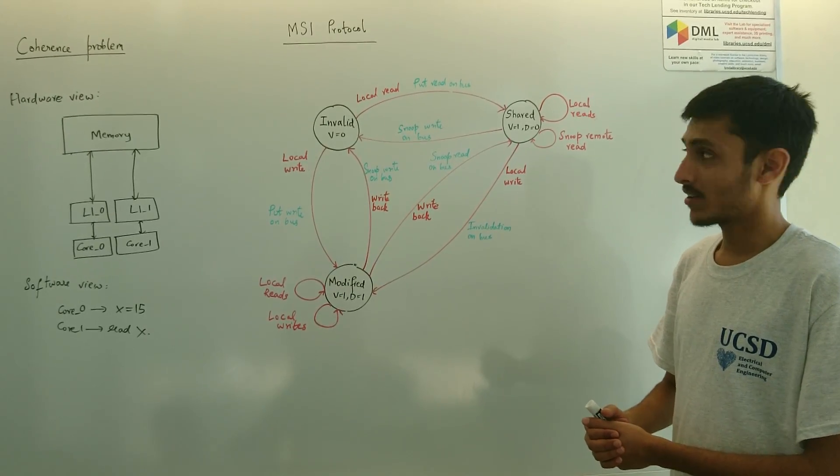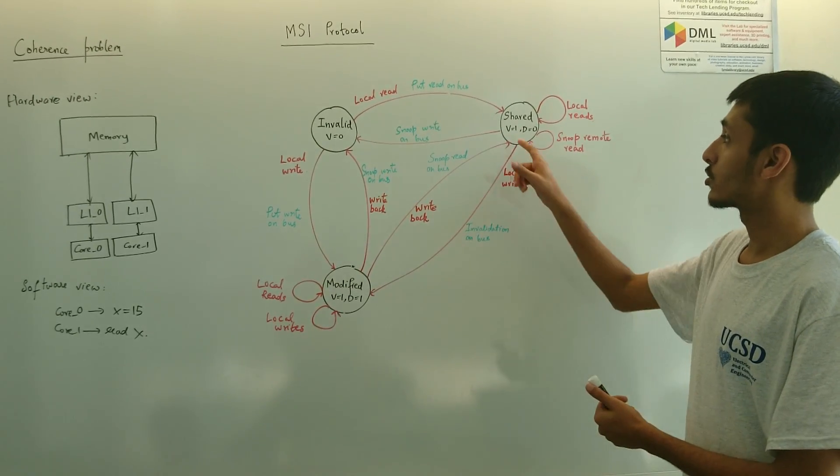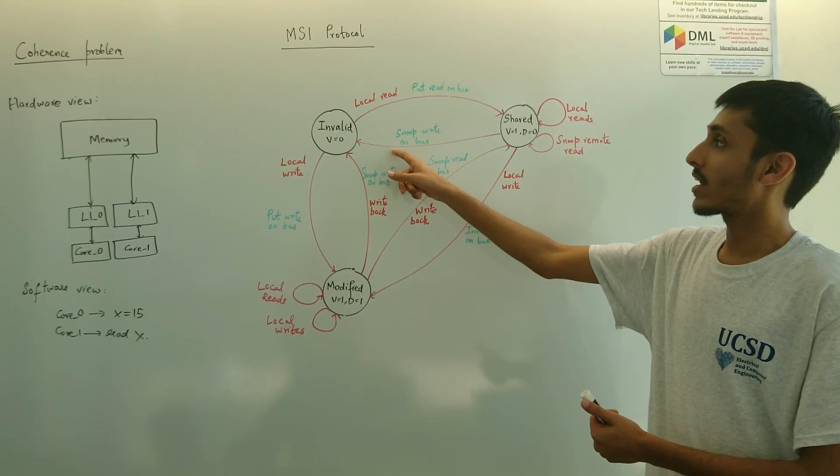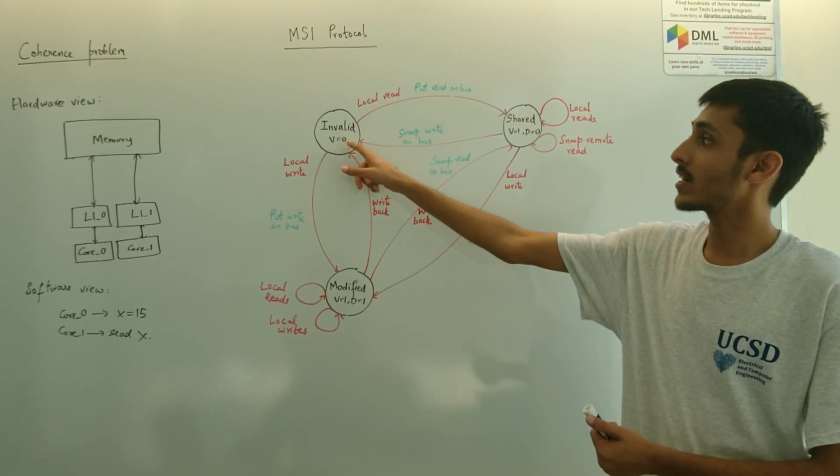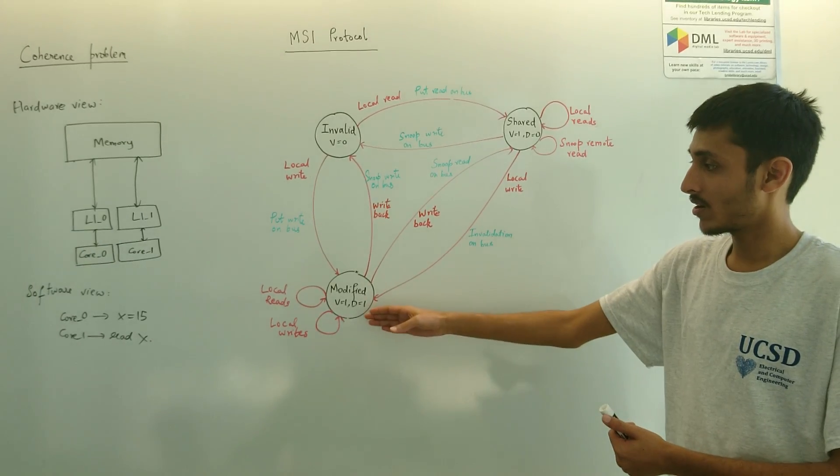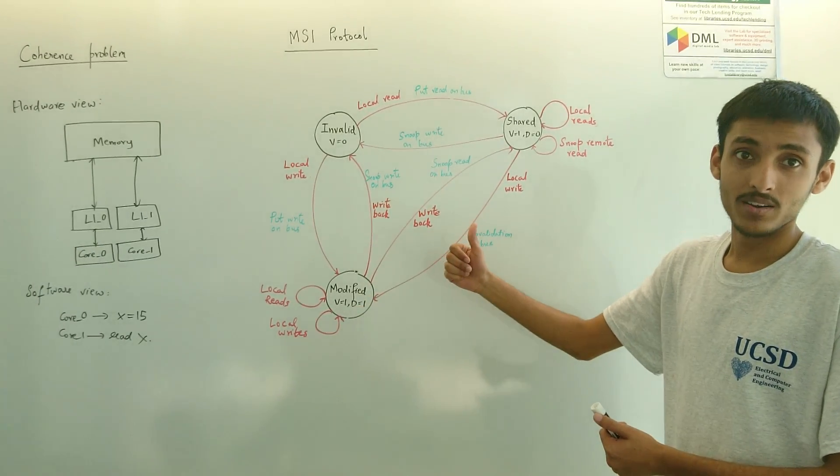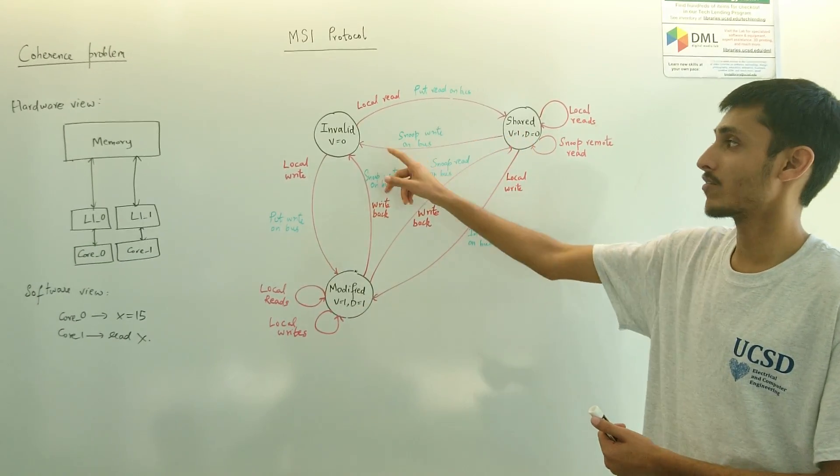However, if there is a write, if it snoops a write on the bus, it has to basically go into an invalid state. That's because there is a fresh one in modified state for the same address and all other copies should be invalidated.